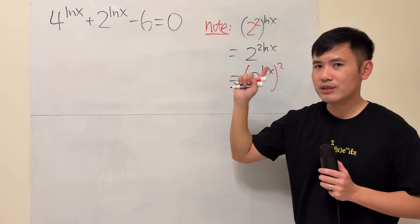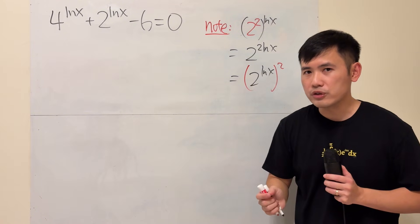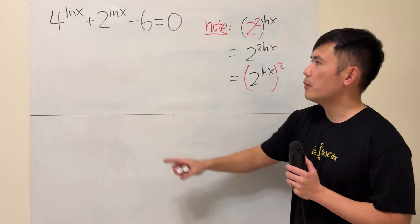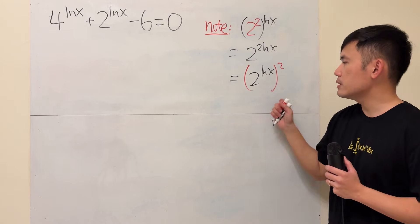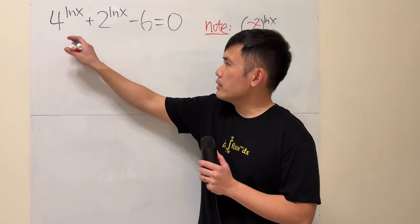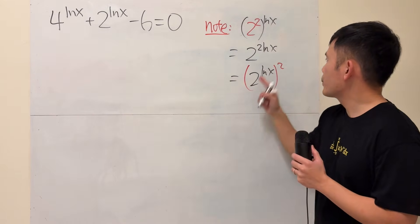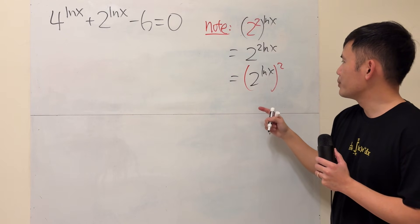this right here is actually the square of this middle term. So that means we actually have a quadratic equation, but it's just going to be in terms of 2 to the ln x power. So, I'm actually going to write this, let's see which form that we like. I'm just going to put it down like this.